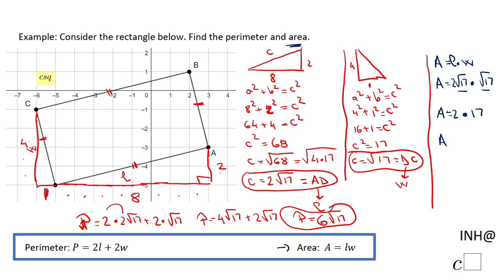So the area is 2 times 17, which is 34. And that's it! If you enjoyed this video, don't forget to click the like button and come back.